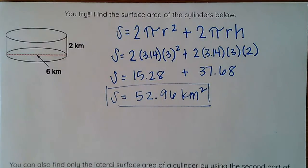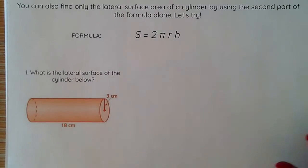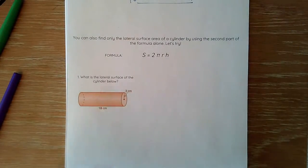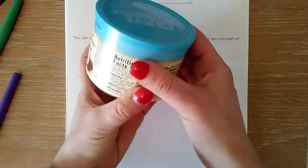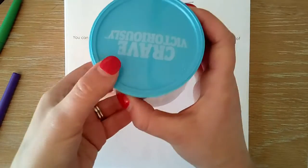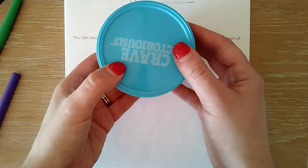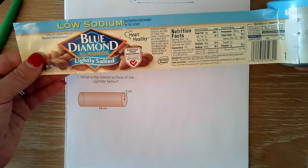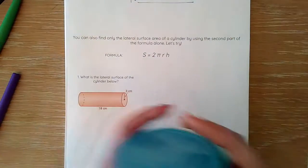I have one more example for you, and that is occasionally we will be asked to find the lateral surface area of a cylinder rather than the entire surface area of a cylinder. An example of that might be thinking of like your canned food. This is a cylinder, and we've got those two identical bases and then one rectangular side. So to find the lateral surface would be us finding maybe that label. So how big would that label be? That would be your lateral surface of a cylinder.